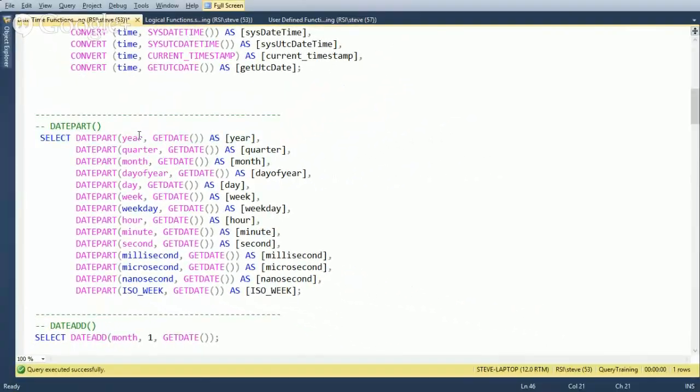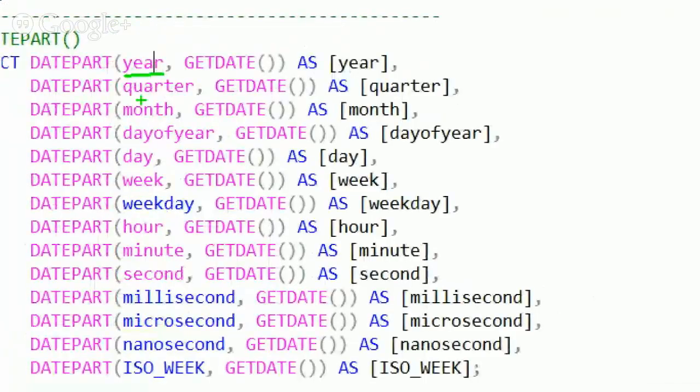The options we've got here are year, which gives us what we want there, quarter, month, day of year, day, week, and weekday. Now, the weekday will give you Sunday through Saturday day of the week as an integer. And that's the thing.